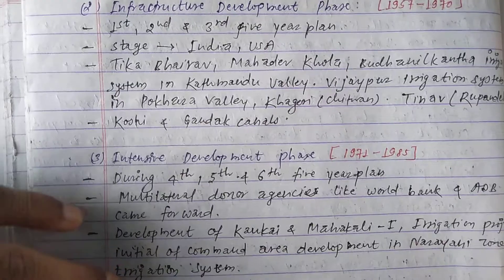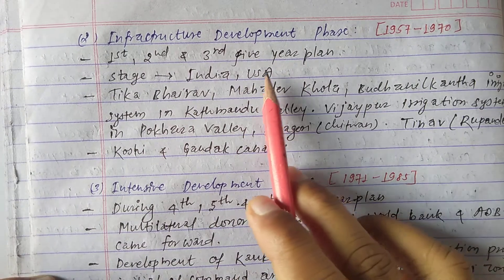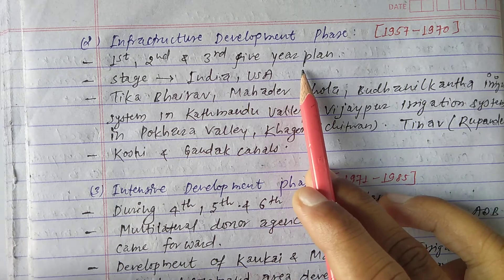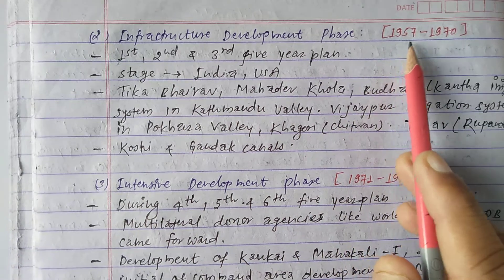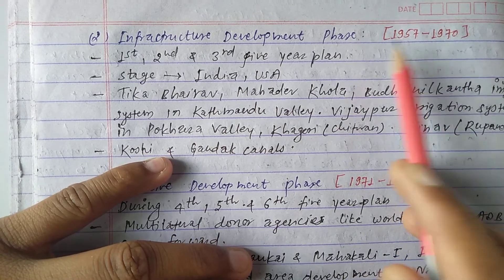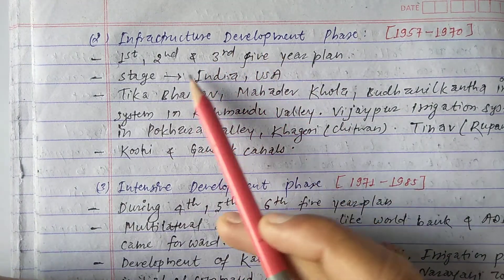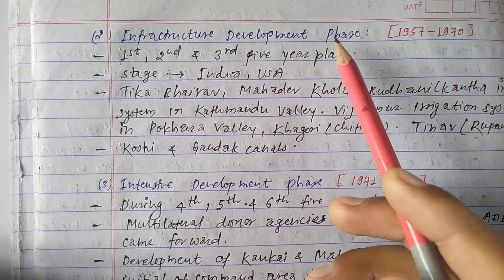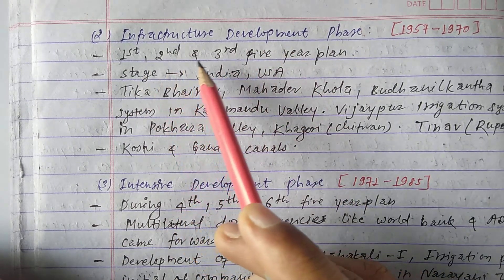The second phase is the Infrastructure Development Phase, ranging from 1957 to 1970. During this phase, different types of infrastructure were developed, which is why it is called the Infrastructure Development Phase. The first, second, and third Five Year Plans were started during this development stage.